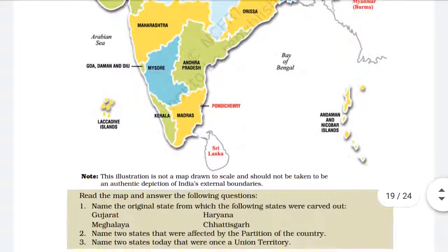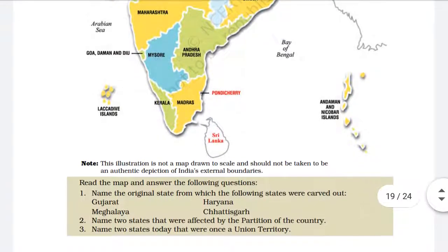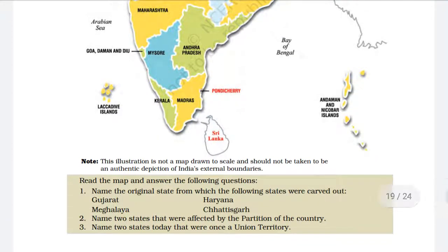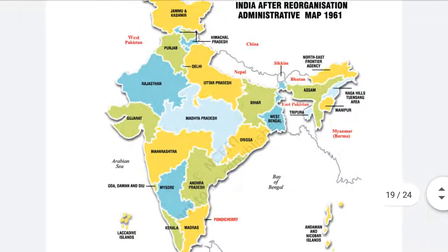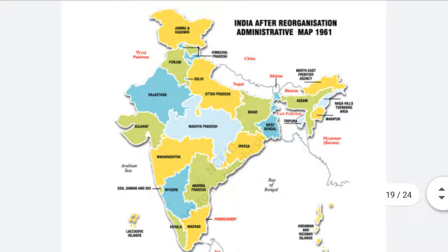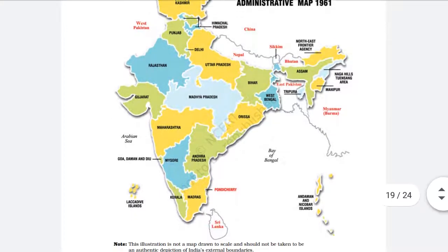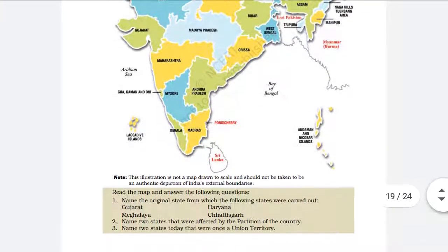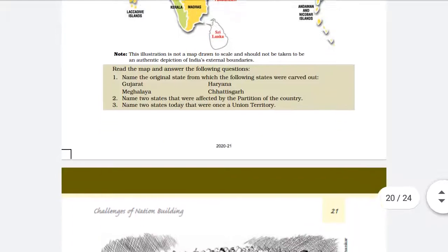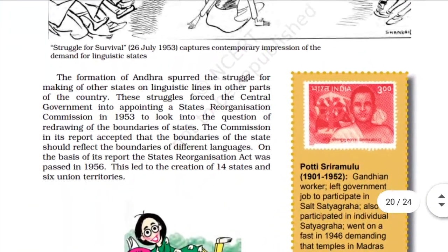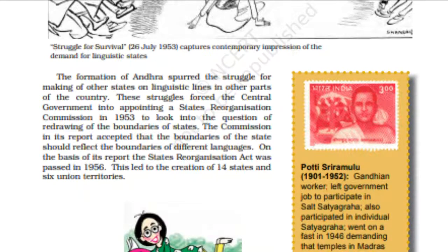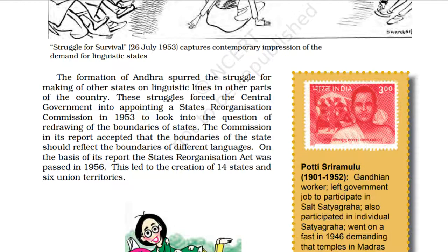Andhra Pradesh became the first state to be created on a linguistic basis in 1952. The formation of Andhra Pradesh spurred the struggle for making other states on linguistic lines in other parts of the country, just as central leaders had feared.